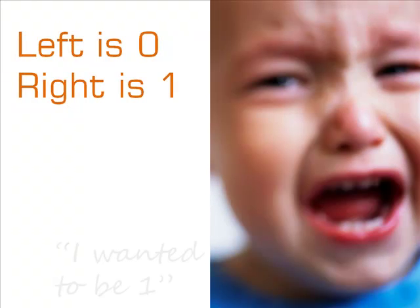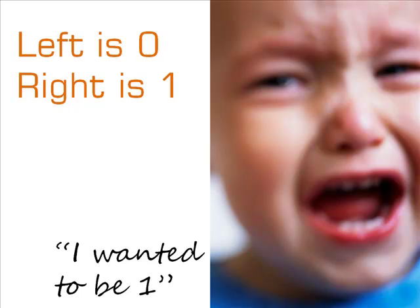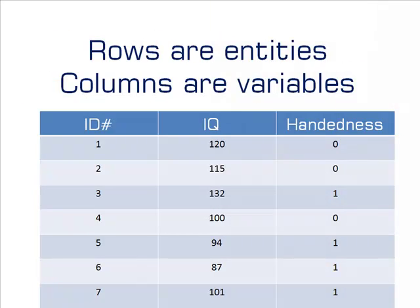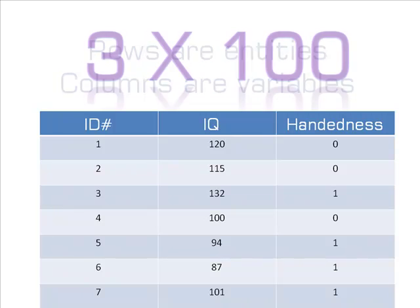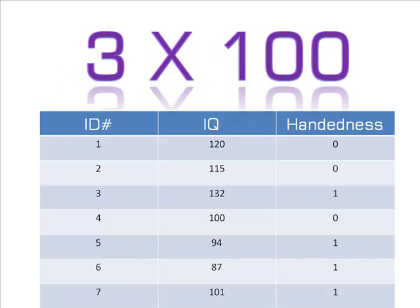When we're done, we will have three columns and 100 rows. Each row will represent a subject, an entity, and each column will represent a variable. With our 3 by 100 data table complete, we will have summarized our entire experiment into a single table. The numbers won't seem so overwhelming now — they are all contained.